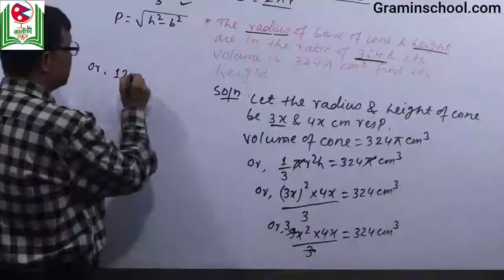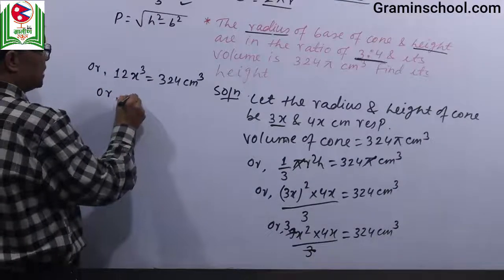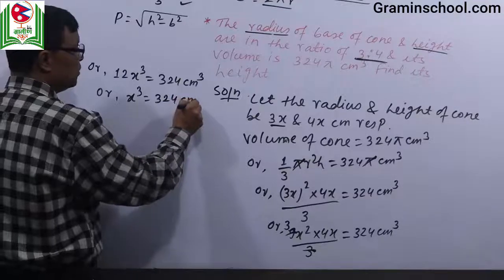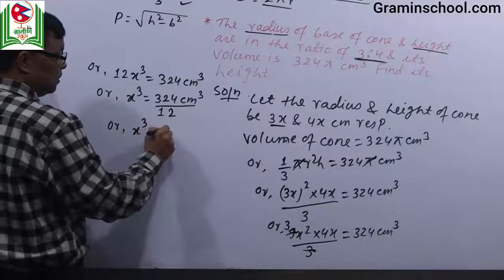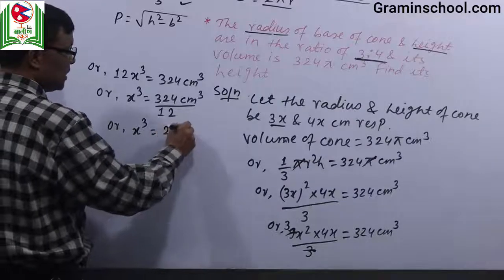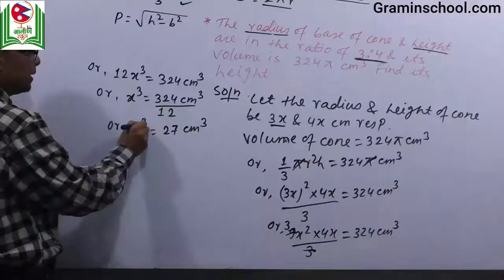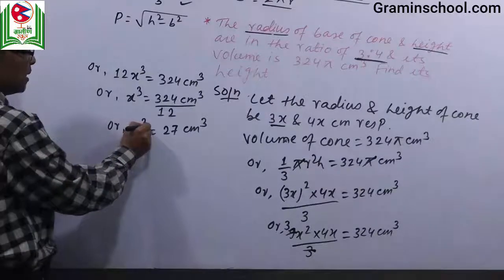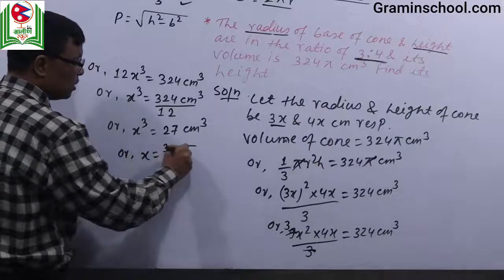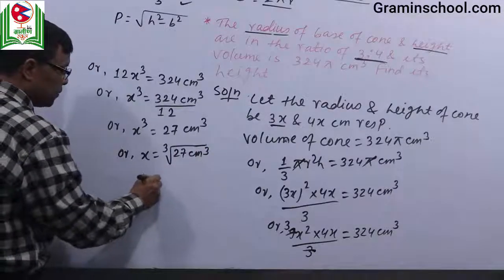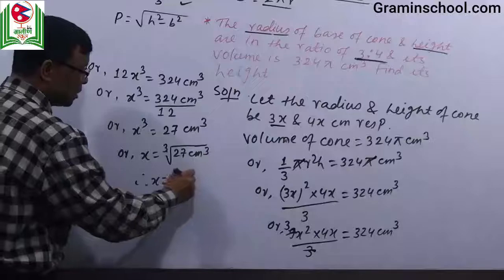3x squared times h. This gives 12x cubed equals 324. Dividing by 12, we get x cubed equals 27. Therefore x is equal to cube root of 27, which is 3 centimeters.